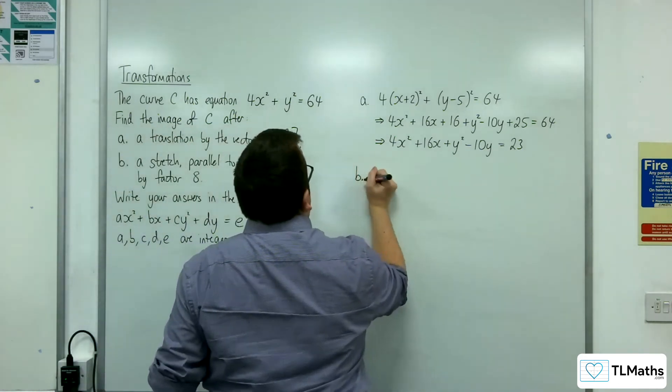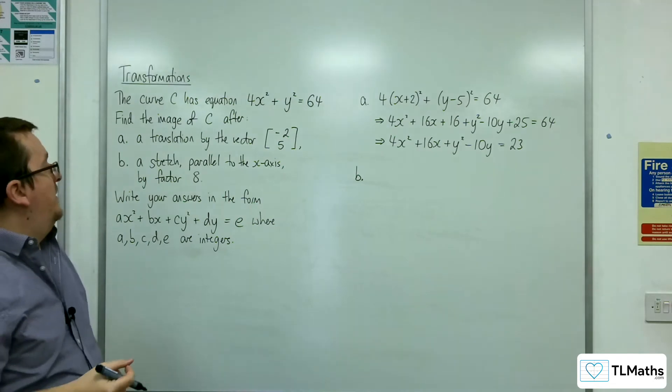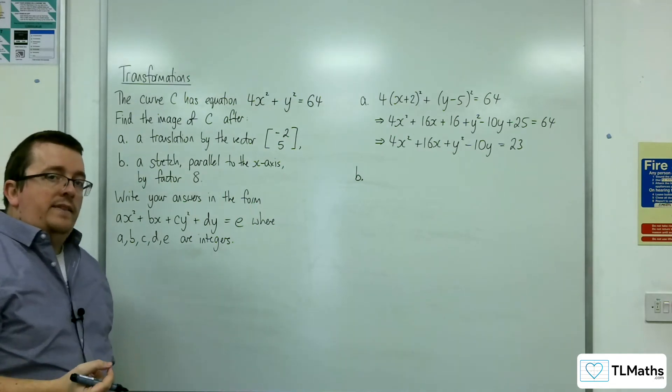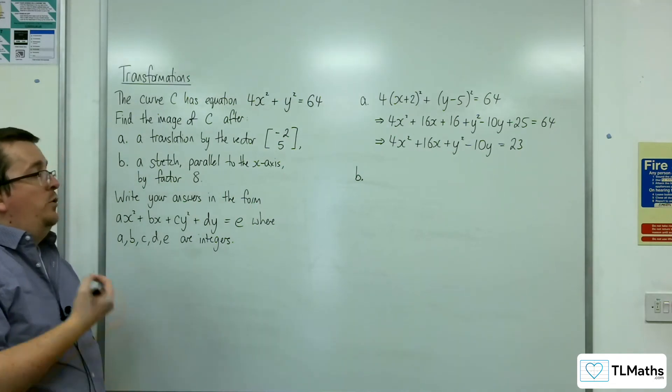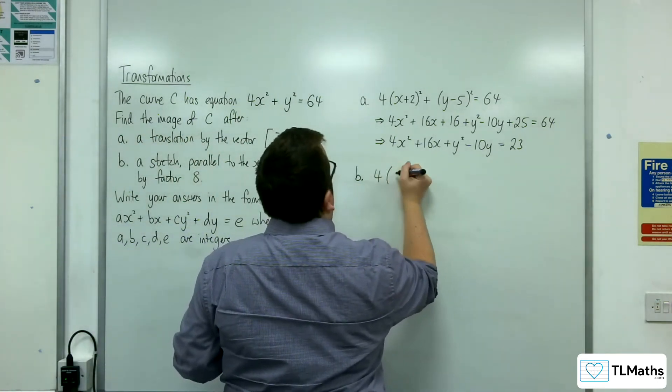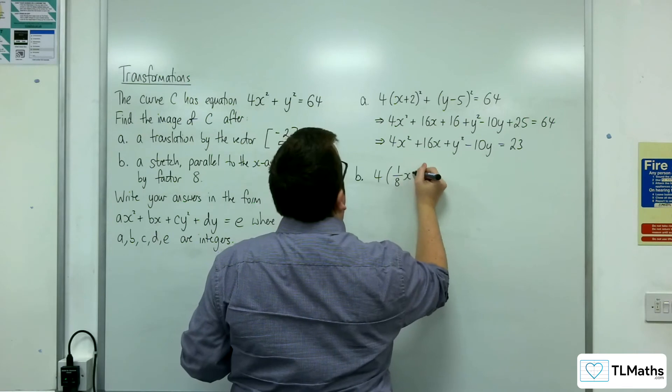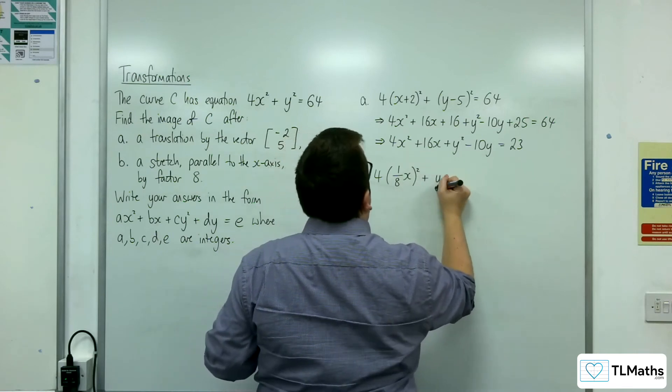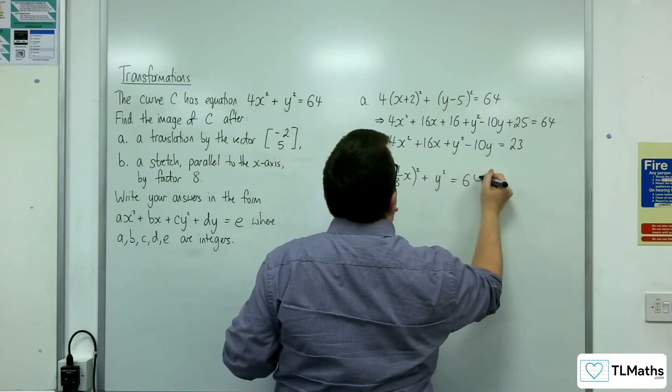So for part B, if instead we're doing a stretch parallel to the x-axis by factor 8, that means we need to replace the x with 1/8 x. So this would be 4 lots of 1/8 x squared plus y squared equals 64.